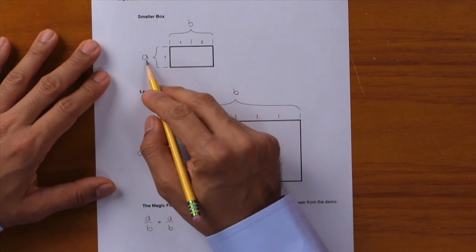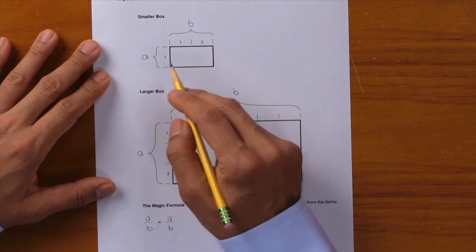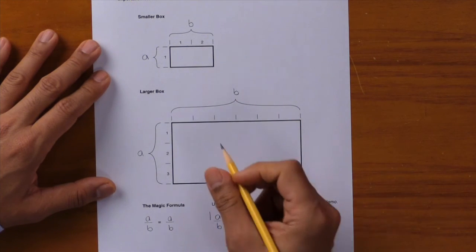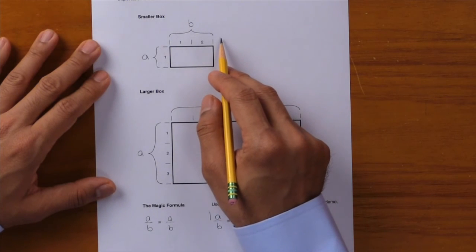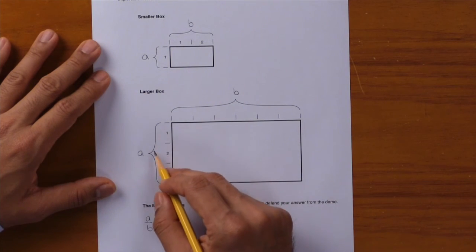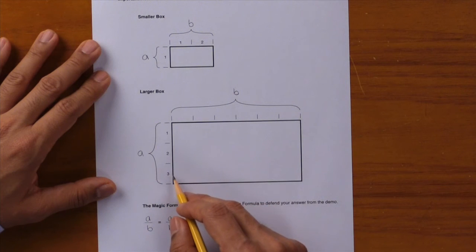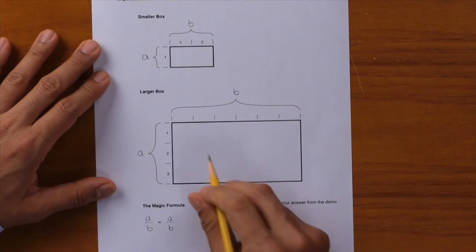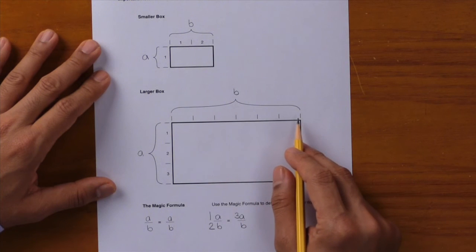In the smaller box, side a was one unit tall, so I'll write down one. Side b was two units wide, so I'll write down two. For the larger box, side a was three units tall, so I'll write it down. Side b was the side that we had to figure out.